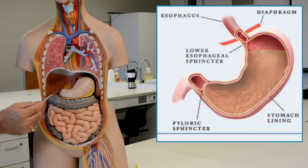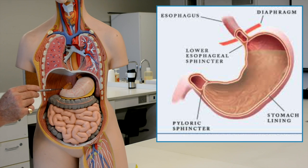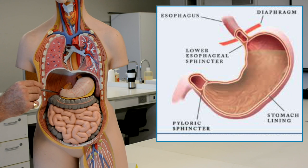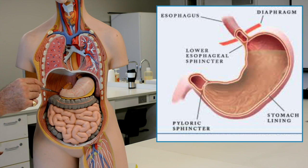From the stomach, food then travels through the pyloric sphincter to enter the duodenum, which is the first part of the small intestine.